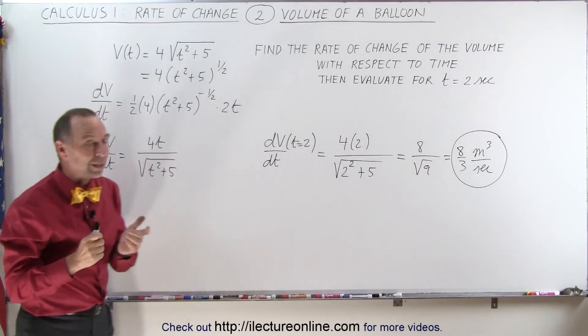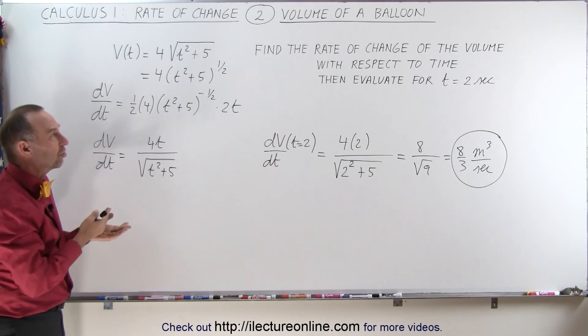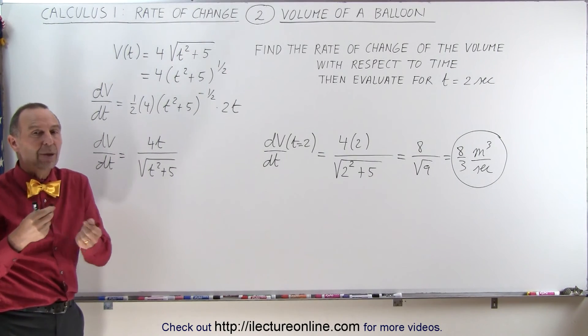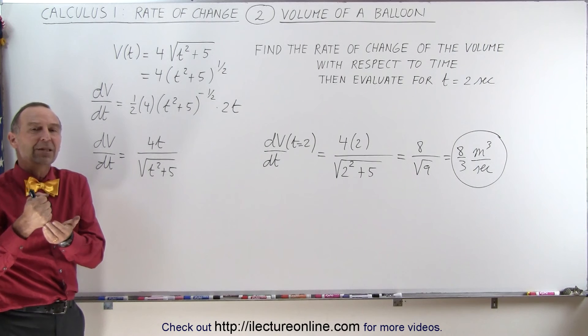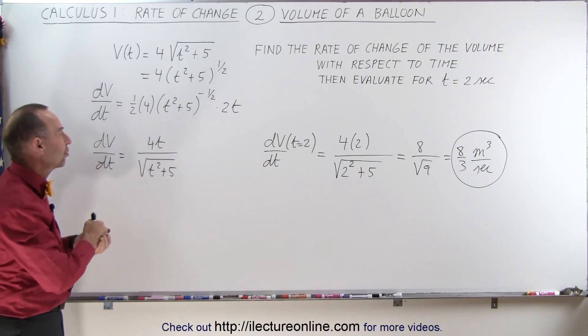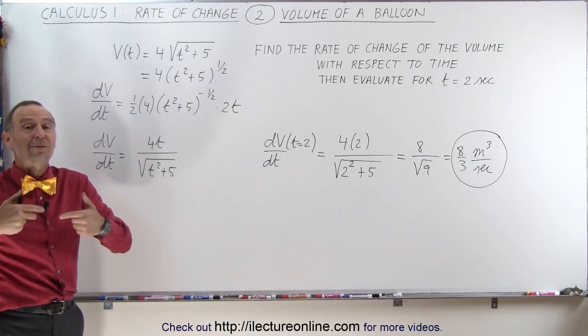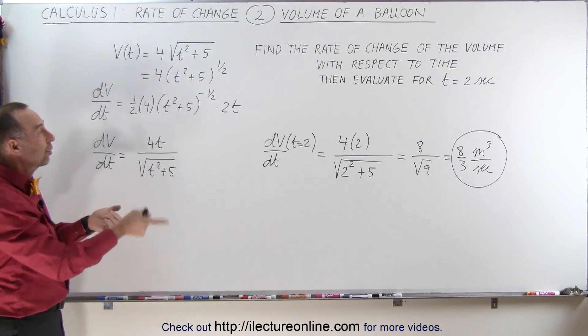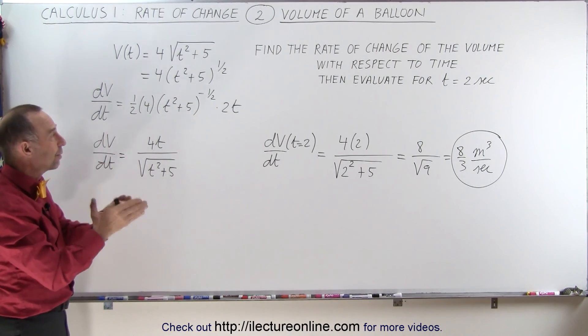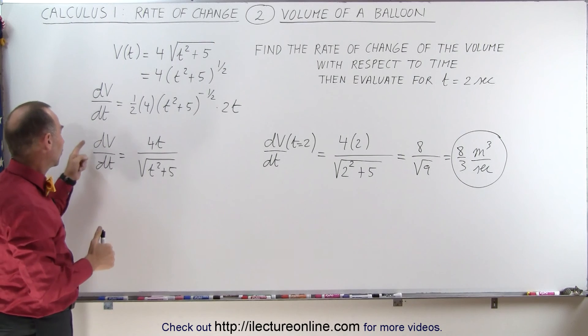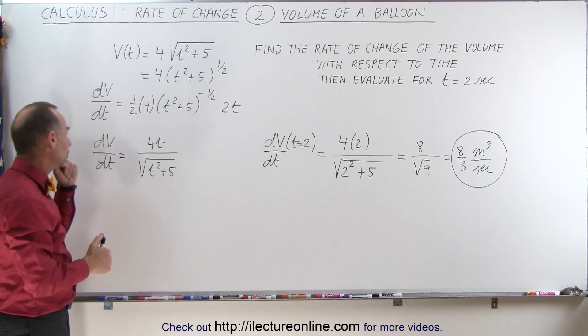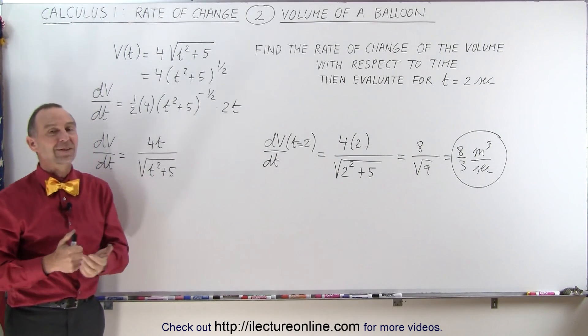So again, when we take, when we find the rate of change of something, we're looking for the derivative, and we need to find out what we need to take the derivative of with respect to time, or what we need to take derivative of with respect to, I should say. So in this case, with respect to time, and we take the derivative of the volume. So it's the rate of change of the volume with respect to time, and that's how it's done.